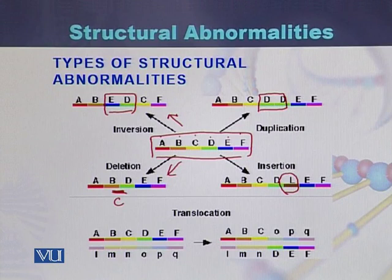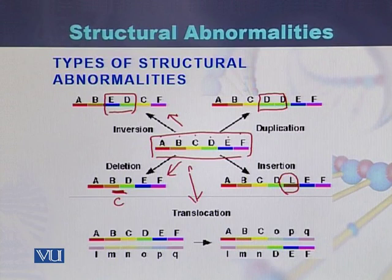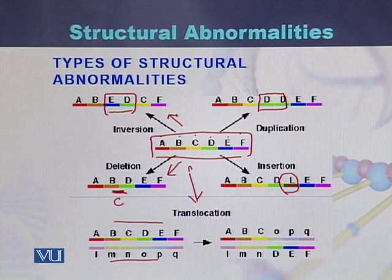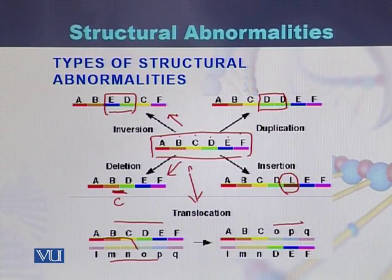In the case of translocation, we can see that fragments A, B, C, D, E, and F are on one chromosome, while on the second chromosome they are L, M, N, O, P, and Q. When there is translocation, the fragments exchange with each other. So fragments A, B and O, P, Q will join with each other.